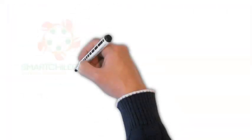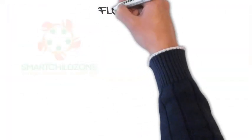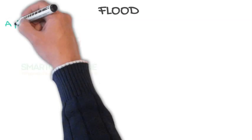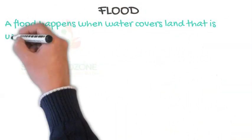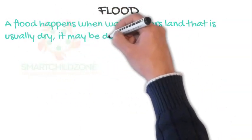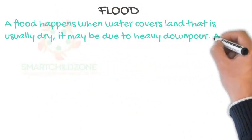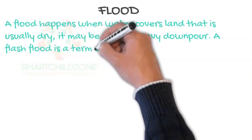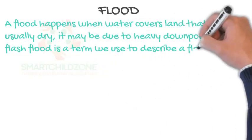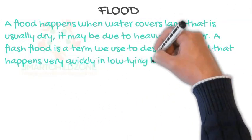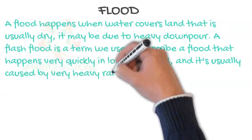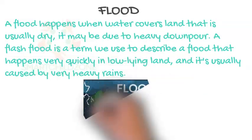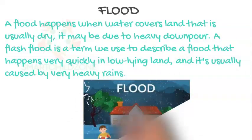Flood. A flood happens when water covers land that is usually dry. It may be due to heavy downpour. A flash flood is a term we use to describe a flood that happens very quickly in low-lying land, and it's usually caused by very heavy rains.